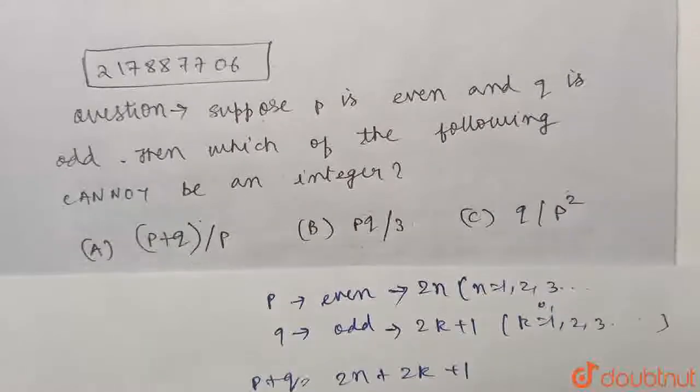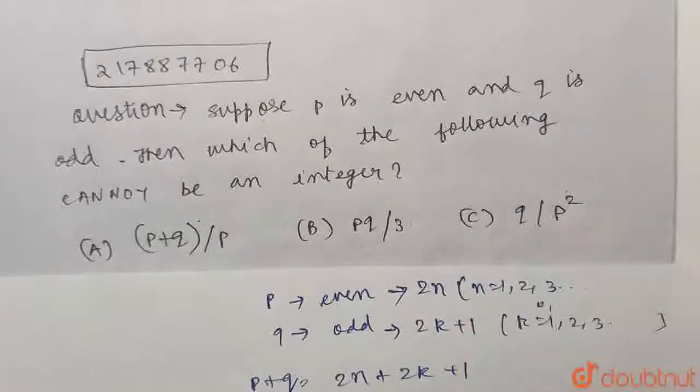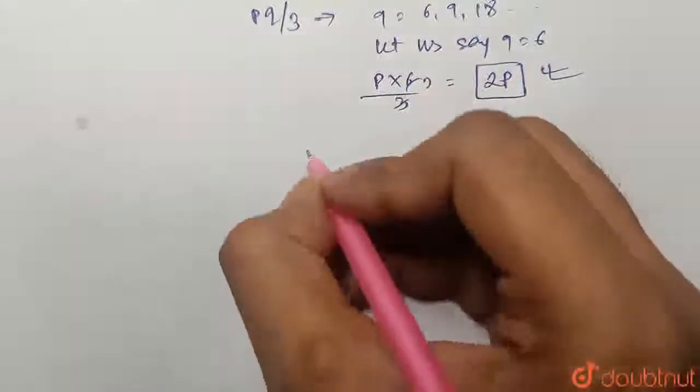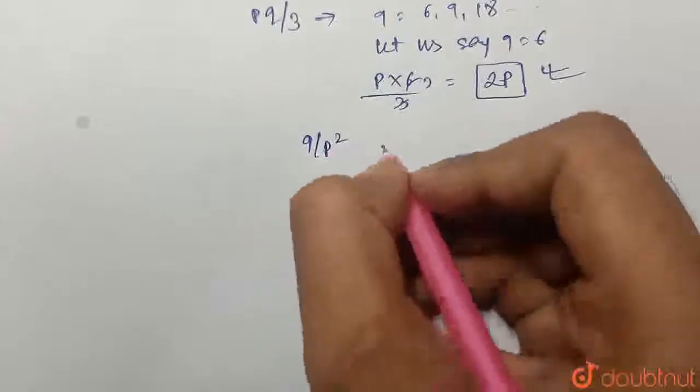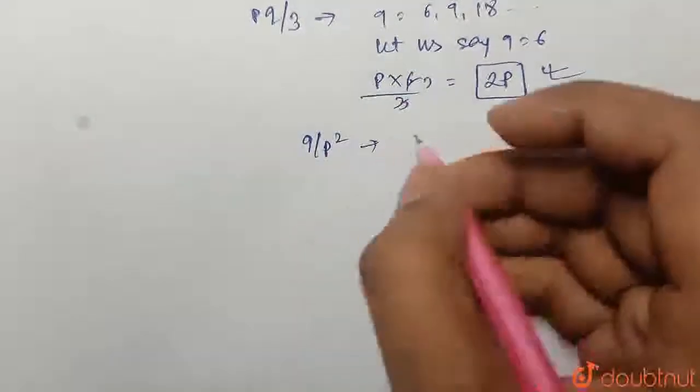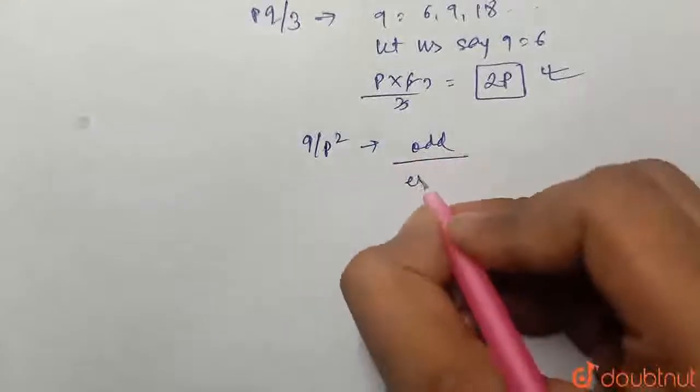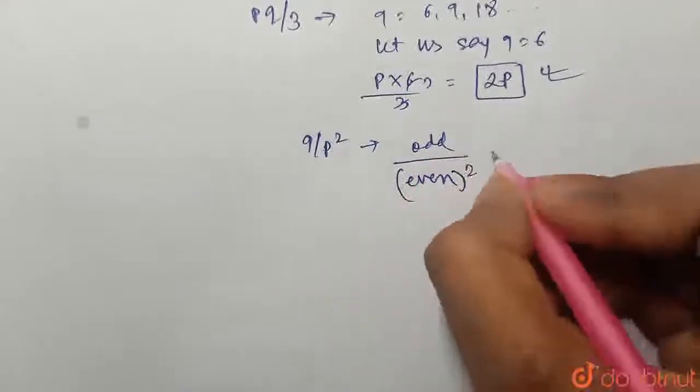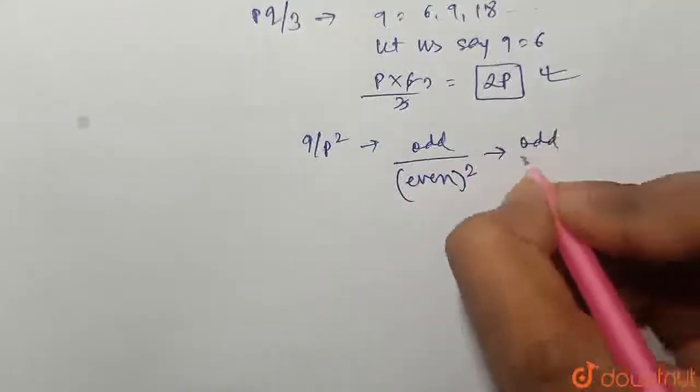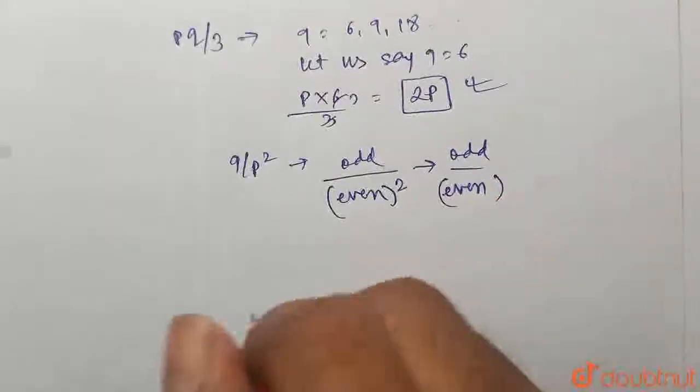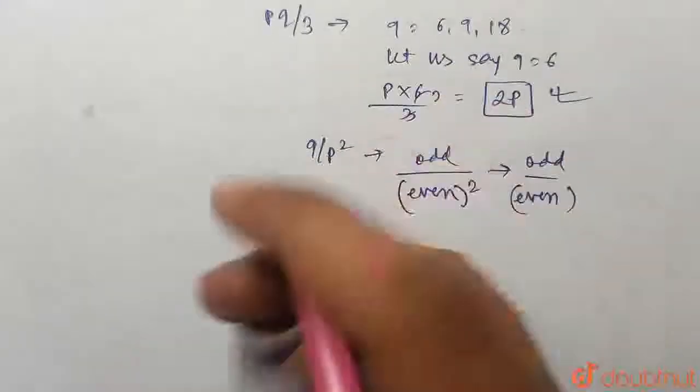So let us move on to our last option. That is Q upon P squared. Now, Q upon P squared. So Q is odd, and P is even. So this is even squared. This will always be even, because even multiplied by even will be an even number. This will always be even.